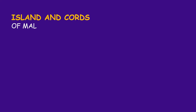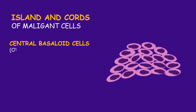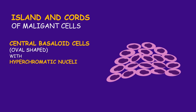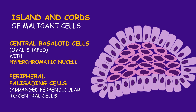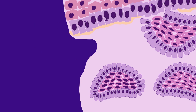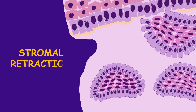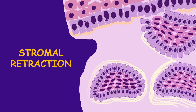Histologically, there are islands and cords of malignant cells. You will observe central basaloid cells that are ovoid in shape with hyperchromatic nuclei. The peripheral cells exhibit a palisading arrangement — that is, they are arranged at right angles to the central cells. You will also observe stromal retraction surrounding the islands of malignant cells on microscopic examination of the basal cell carcinoma lesion.